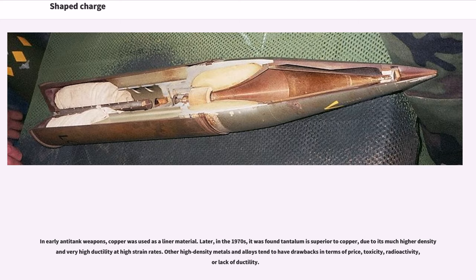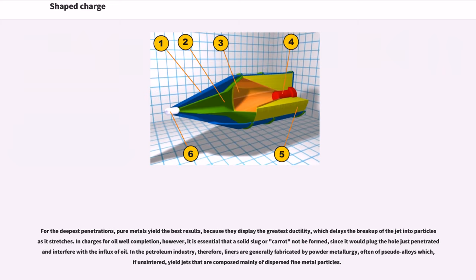In early anti-tank weapons, copper was used as a liner material. Later, in the 1970s, it was found tantalum is superior to copper, due to its much higher density and very high ductility at high strain rates. Other high-density metals and alloys tend to have drawbacks in terms of price, toxicity, radioactivity, or lack of ductility. For the deepest penetrations, pure metals yield the best results because they display the greatest ductility, which delays the breakup of the jet into particles as it stretches.